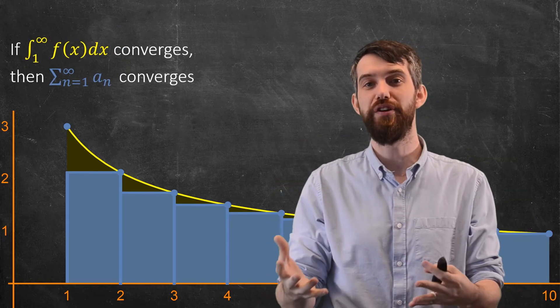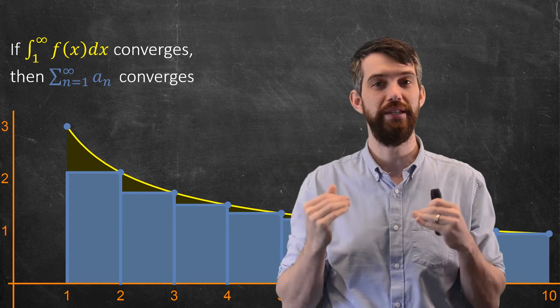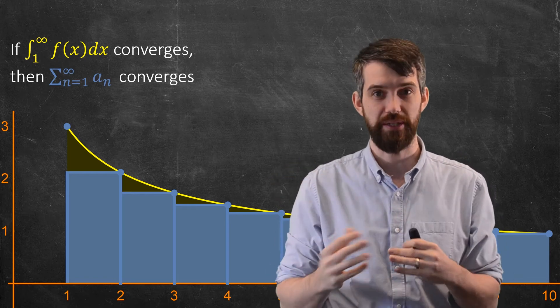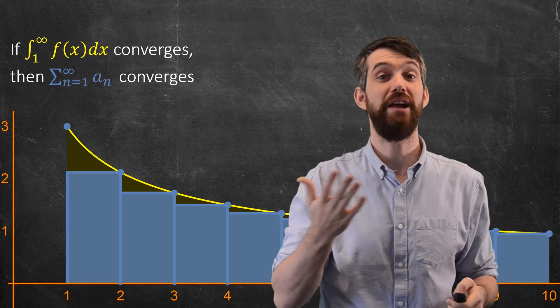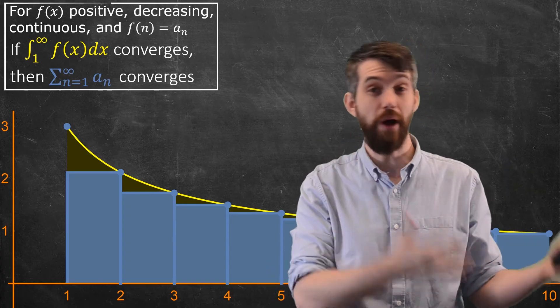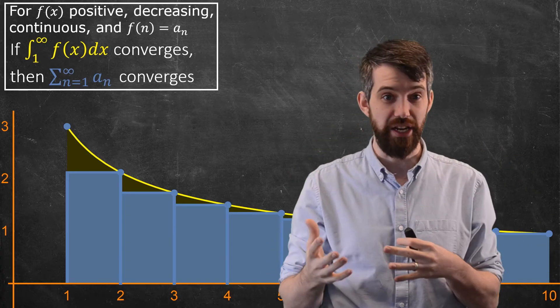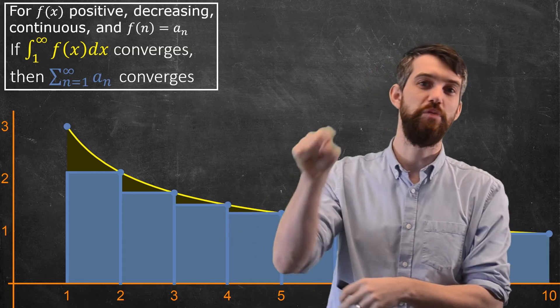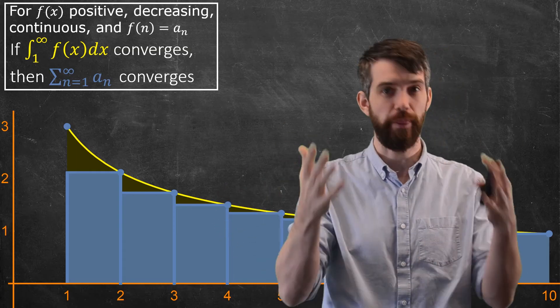It says that if the improper integral converges, then so too indeed does the series. And again, this is under the context of a function which is positive and decreasing and continuous where the function values, when you plug in n, just give your series terms. Those are my assumptions.